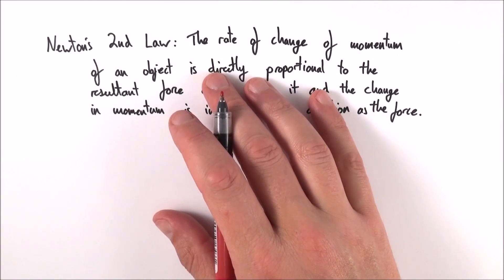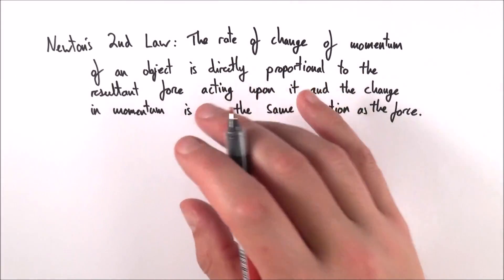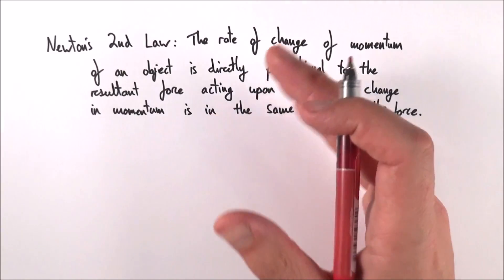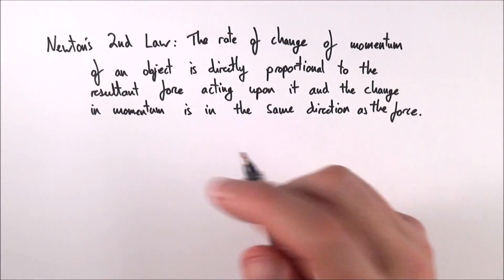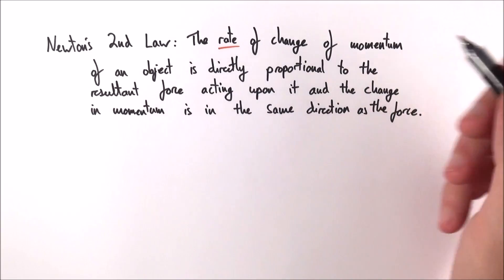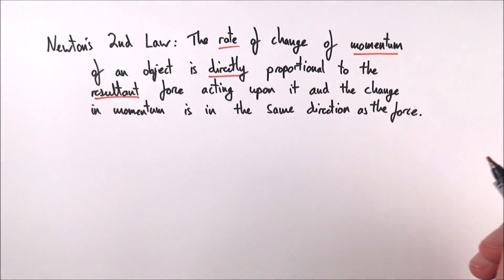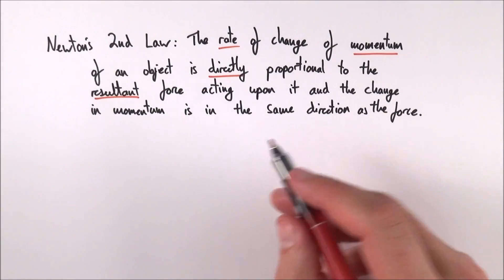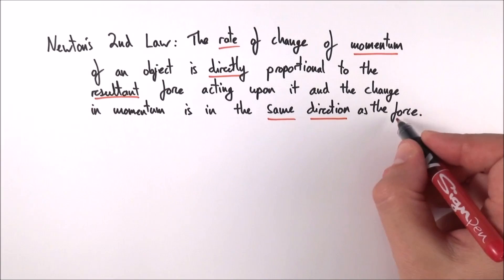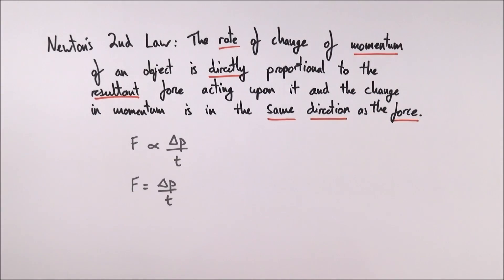Here is Newton's second law, and it looks pretty wordy and maybe a bit longer than F equals MA, which you might be used to from previous work. It basically says that the rate of change of momentum of an object is directly proportional to the resultant force acting upon it, and the change of momentum is in the same direction as the force. It's this last bit here that people often forget about.